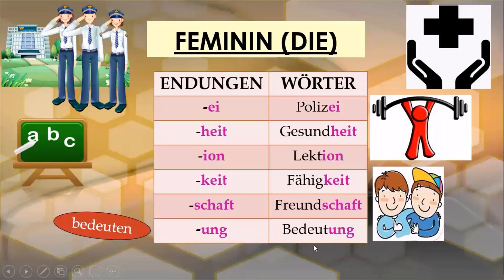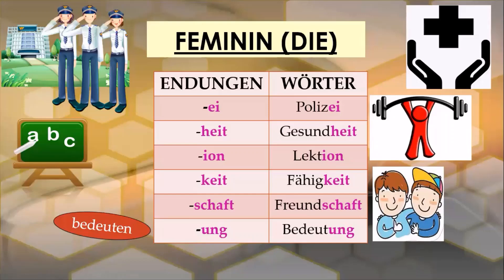The last ending is '-ung', which means meaning. This noun comes from the verb 'bedeuten', meaning 'to mean', which I covered in my previous tutorials. Do stay updated for part three of this tutorial, in which I will cover the last gender — the neutral gender of the German nouns.